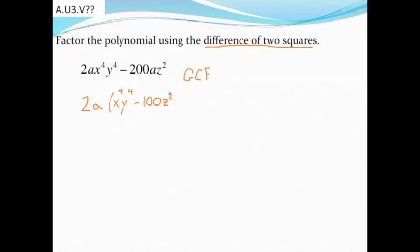Taking a look I can see that yes, difference of two squares will work now. Each of these, or the only number I really see there is that 100, it's a perfect square. Also you need to make sure you have even exponents. As long as your exponents are even, you can take a square root of them. Really you're just dividing by 2 with those exponents.